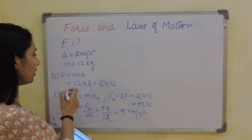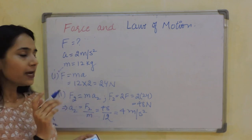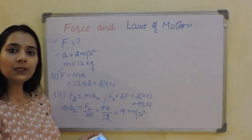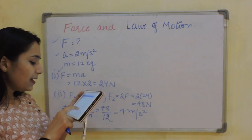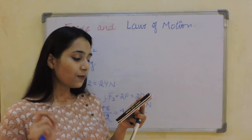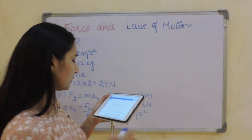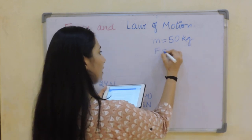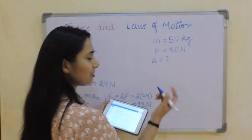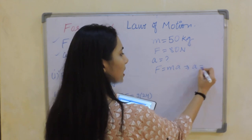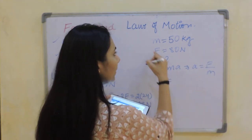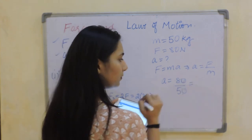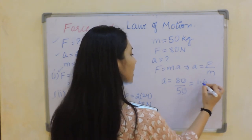It's very easy. If you use the simple formula F equals MA, it's not a big deal — you just need to know how to proceed. Write what is given, write what you need to find, write the formula, and simply put in the values. Next question: a man pushes a box of mass 50 kg with a force of 80 Newton. A equals F divided by M, so A equals 80 divided by 50, giving 1.6 m/s².